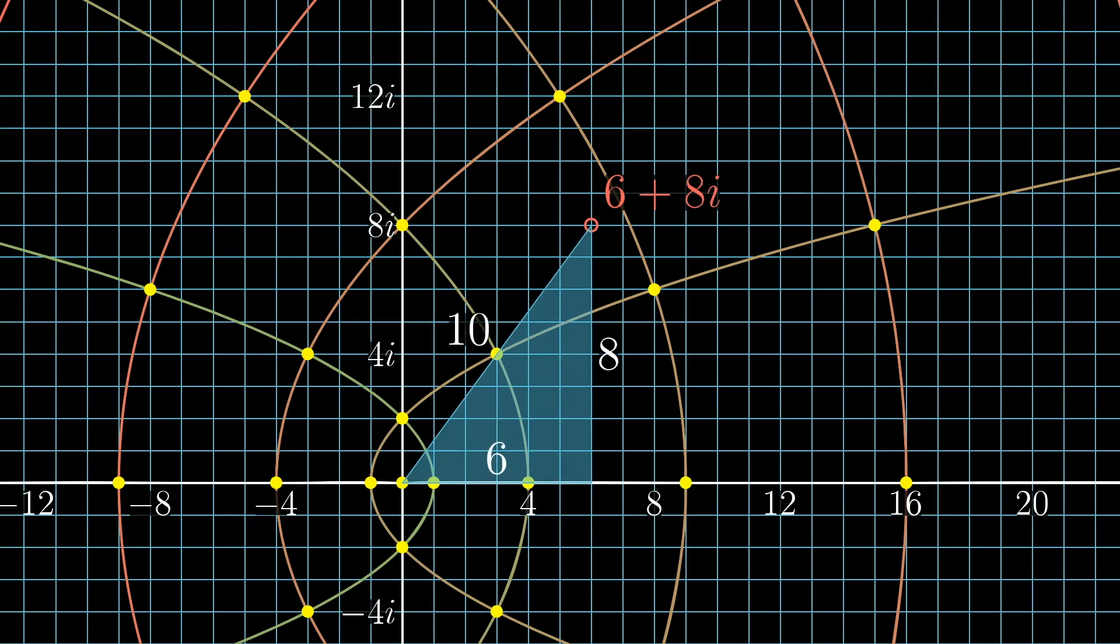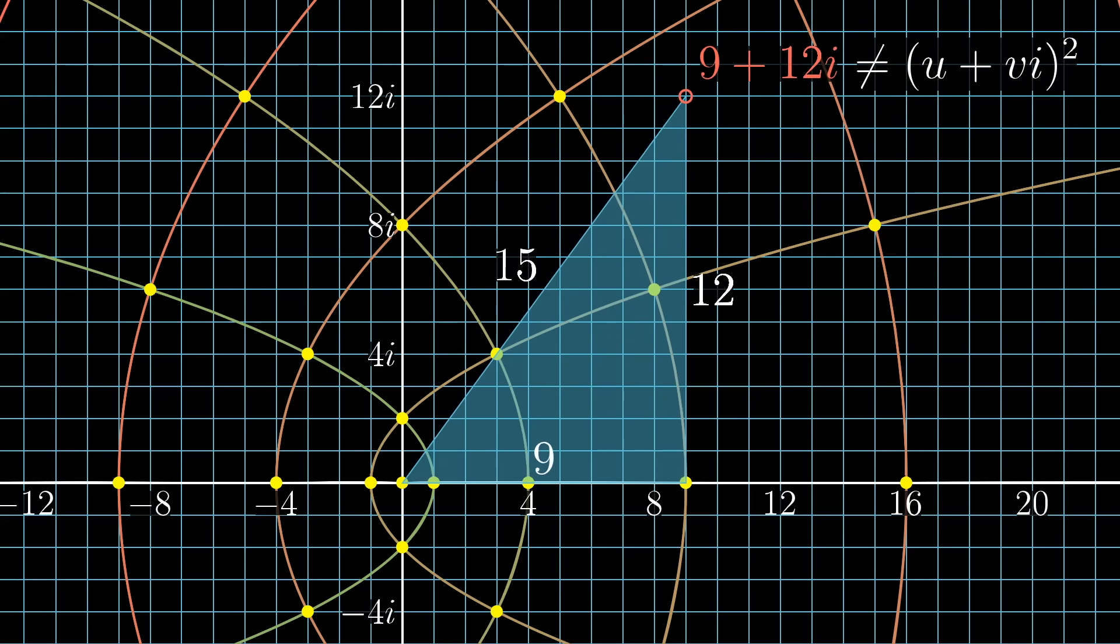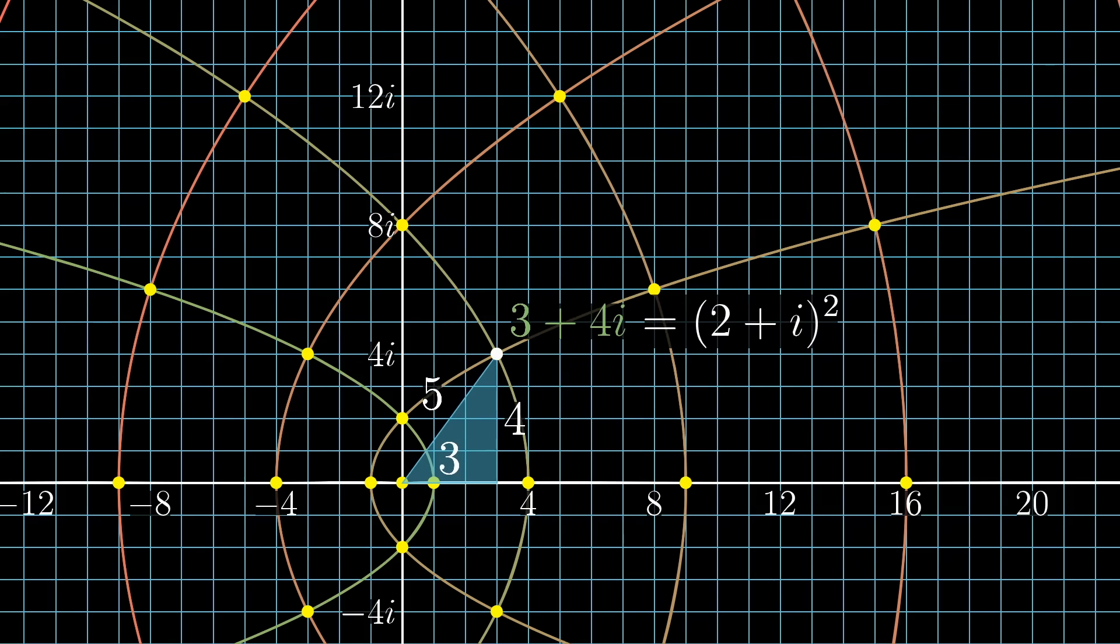There are simply no integers u and v where u plus vi squared is 6 plus 8i. Likewise, you will never hit 9 plus 12i. But these don't really feel like anything new, do they? Since you can get each one of them by scaling up the familiar triple 3, 4, 5, which is accounted for in our method.